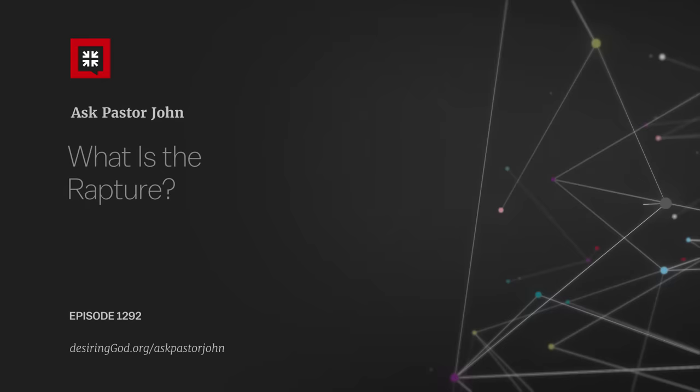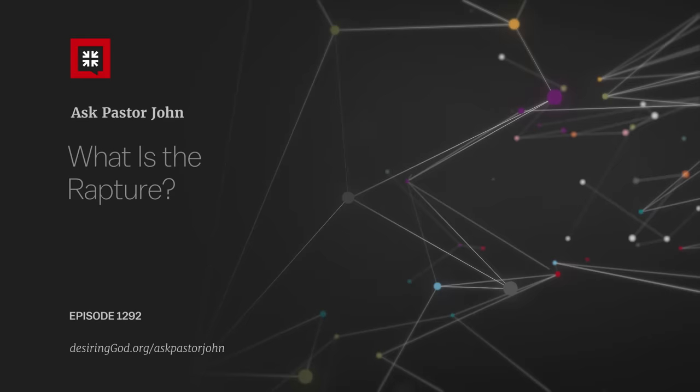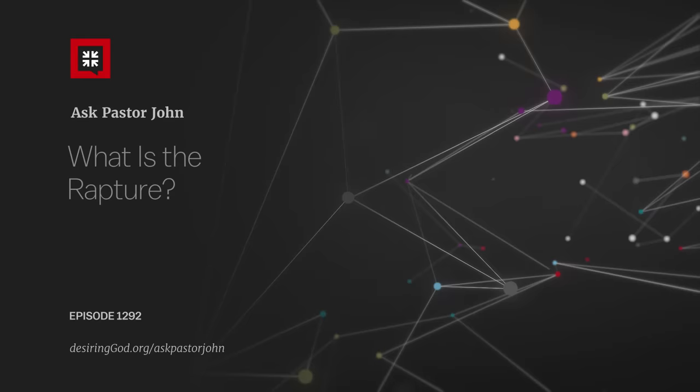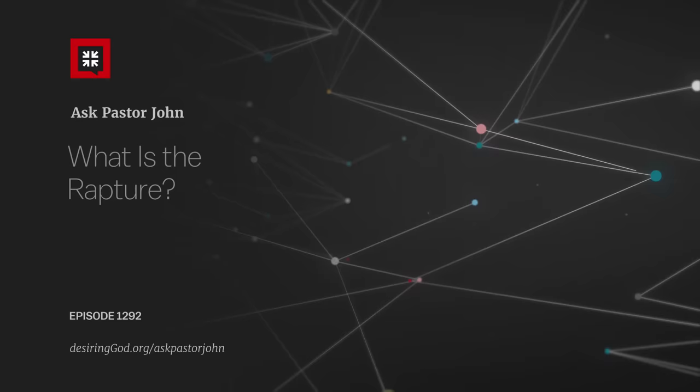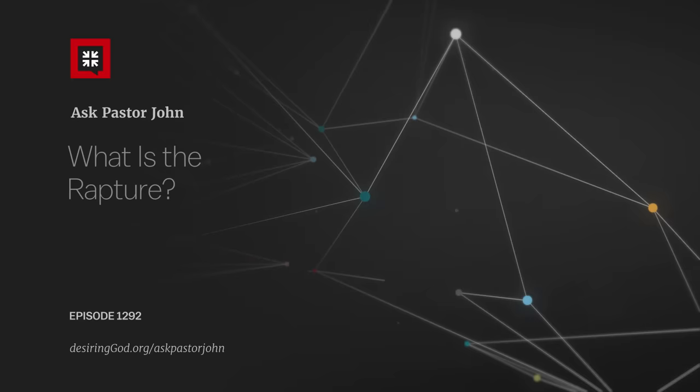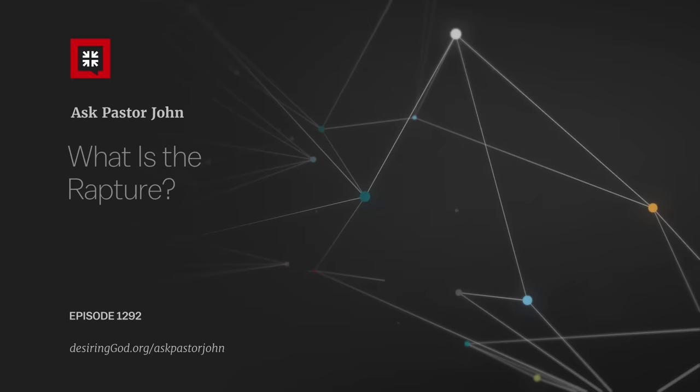Then the next chapter goes like this. This is chapter 2 of 2 Thessalonians: 'Now concerning the coming of the Lord Jesus Christ, and our being gathered together to meet him. We ask you, brothers, not to be quickly shaken in mind or alarmed either by a spirit or a spoken word or a letter seeming to be from us to the effect that the day of the Lord has come already.'